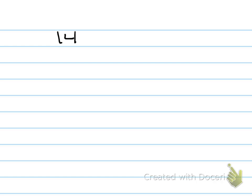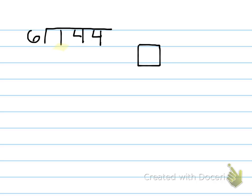Let's say we had 144 divided by 6. Let's represent the dividend with quick pictures. I see 100, which is represented like this. I see 4 tens, which is represented like this. And I see 4 ones, which is represented by dots.